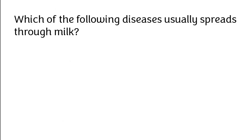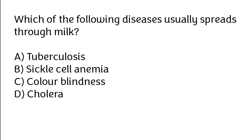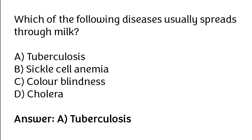Which of the following diseases usually spreads through milk? Tuberculosis, sickle cell anemia, color blindness, cholera. The correct answer is option A: Tuberculosis.